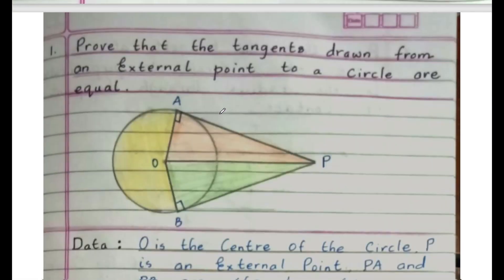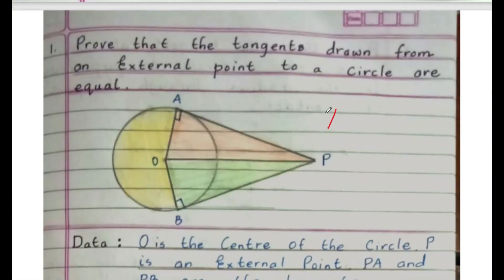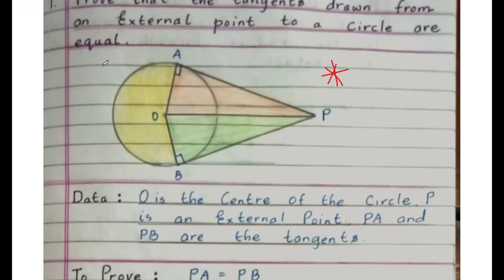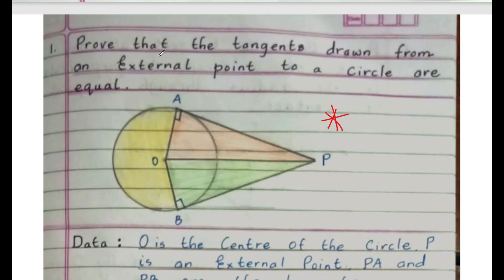Now we will study the 3-mark important theorem. Take a notebook and pencil. First, write the statement — that statement will be asked in the exam: the tangent drawn from an external point to a circle are equal. Students, before explaining this theorem, I suggest that tomorrow's paper will be easy to score above 60 marks.